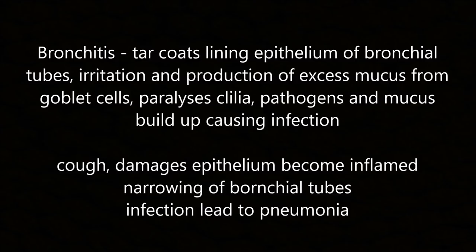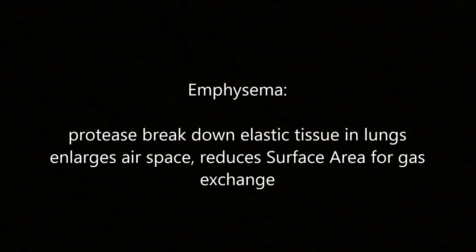Smoking: bronchitis occurs when tar coats the lining epithelium of the bronchial tubes. Irritation and excess mucus from goblet cells paralyse the cilia, and pathogens in mucus build up causing infection. The epithelium becomes inflamed and narrowing of the bronchial tubes leads to infection, which can lead to pneumonia.